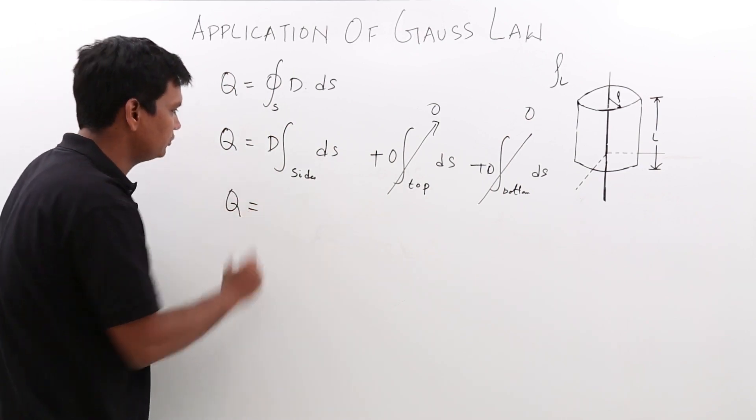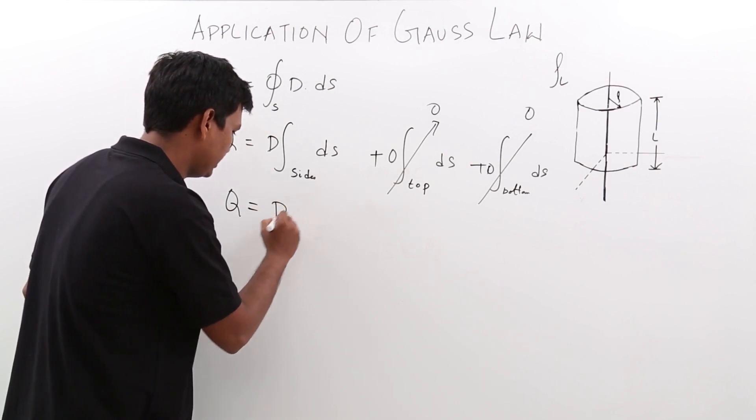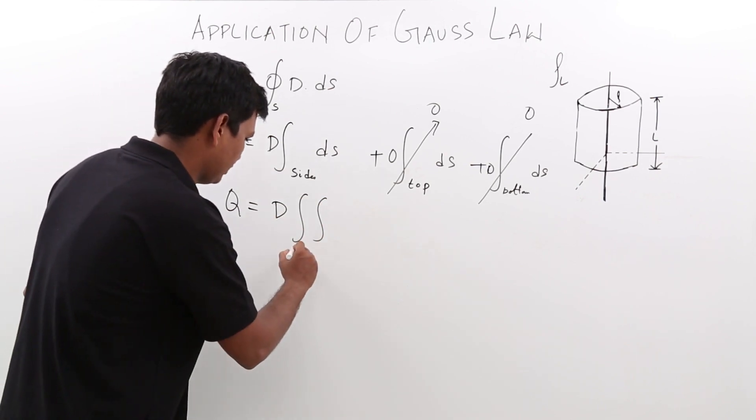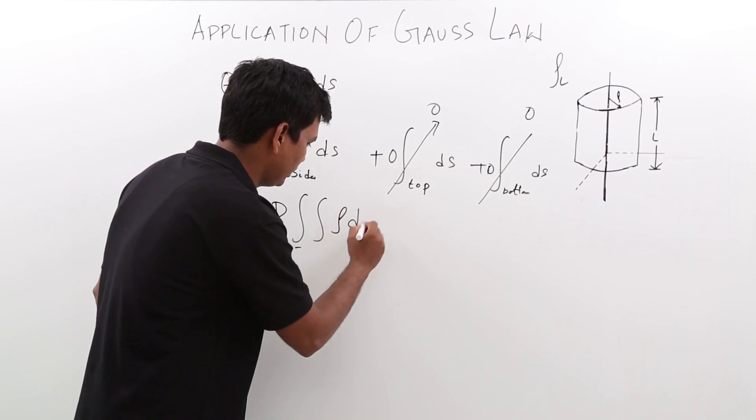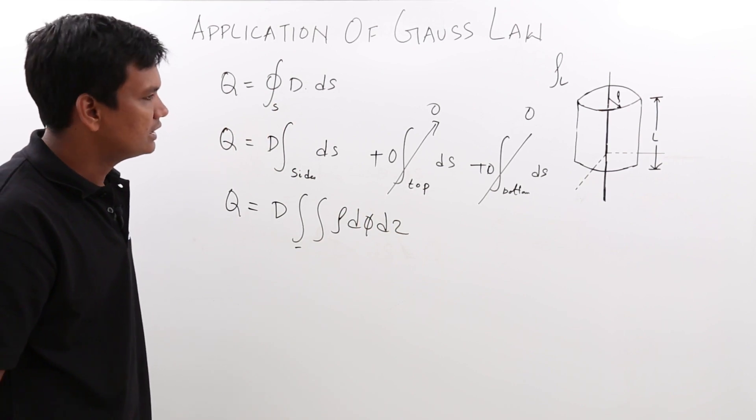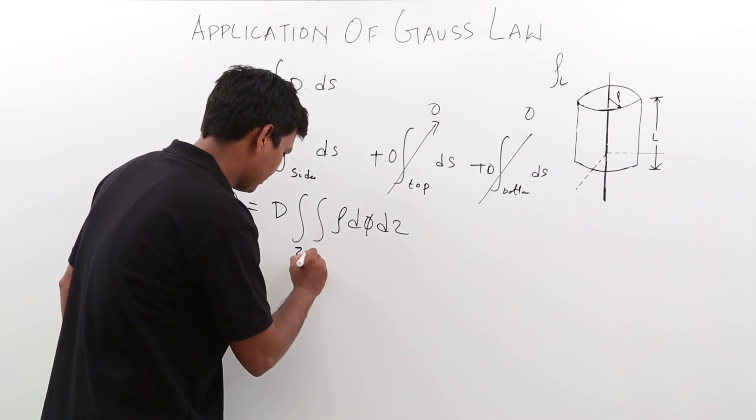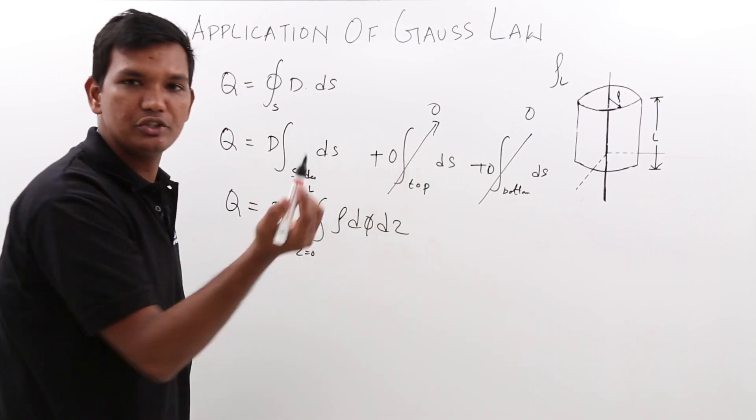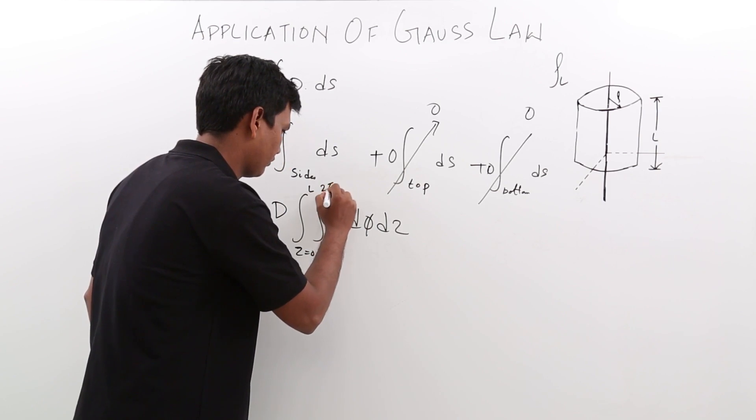So q is equal to, we are going to take the cylindrical coordinate system. It would be D in cylindrical coordinate, rho d phi dz. This is a surface integral in cylindrical coordinate. From what units is z varying? z is varying from 0 to l. For what angle is phi varying? phi is varying from angle 0 to 2 pi.